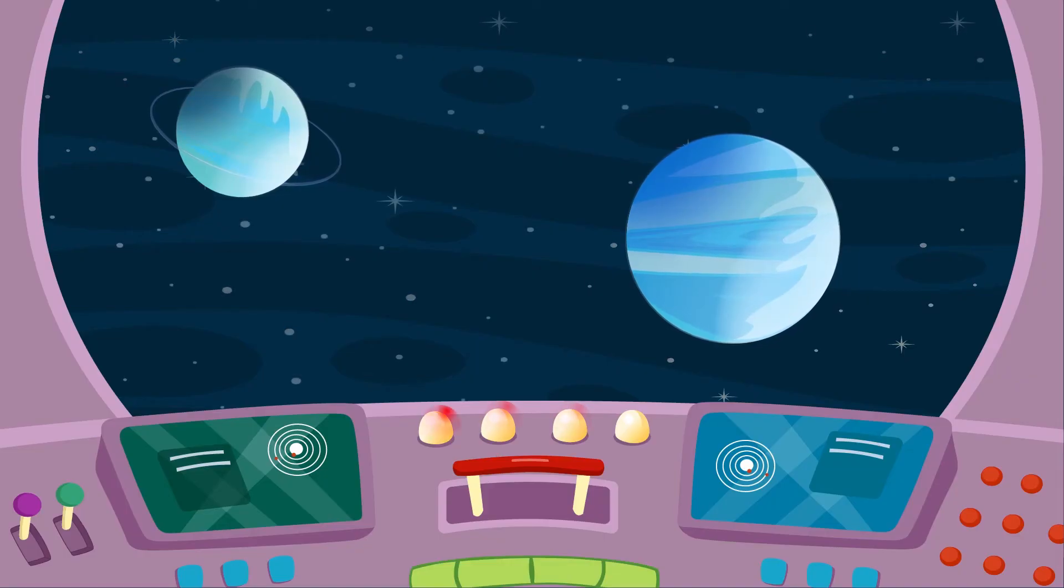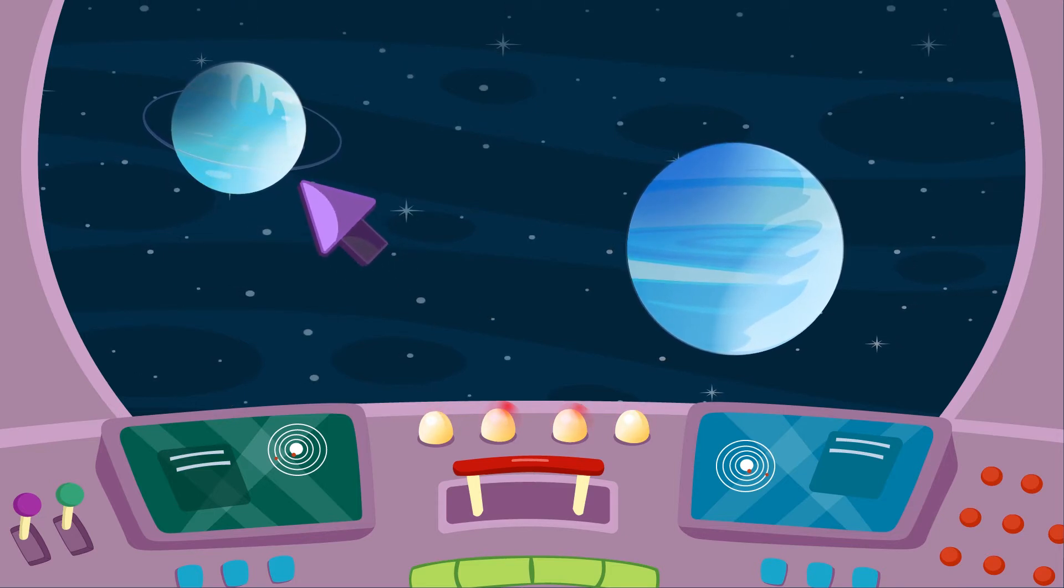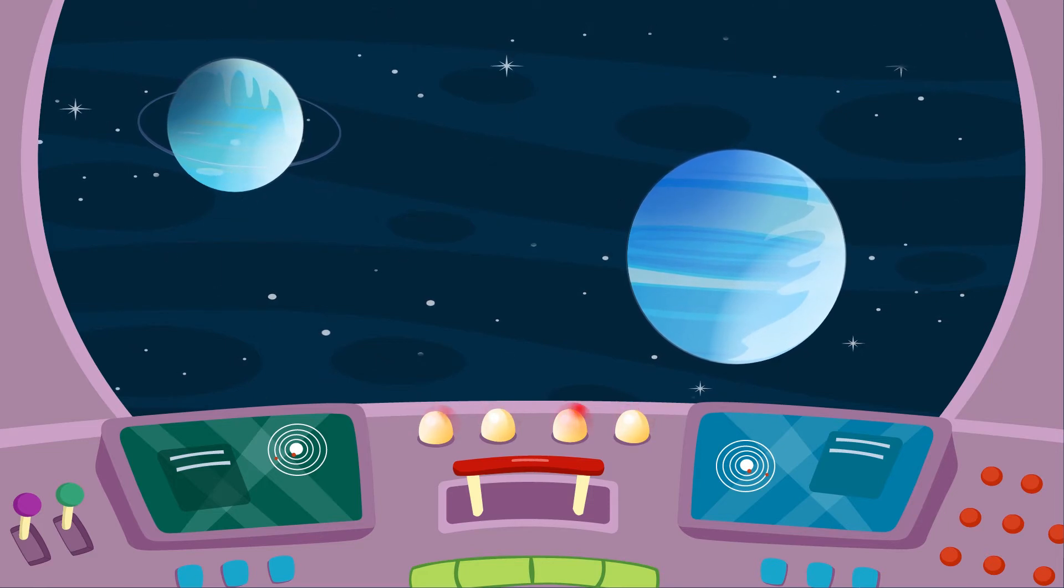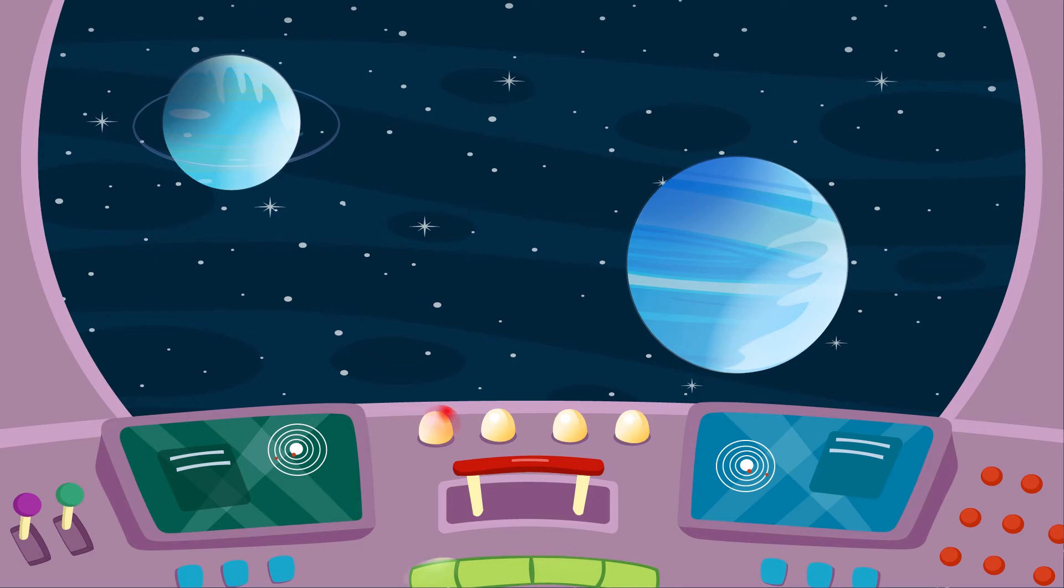The last two planets of the solar system are Uranus and Neptune. Uranus was the first planet to be discovered by scientists. This planet is called the Sideways Planet because it rotates on its side.